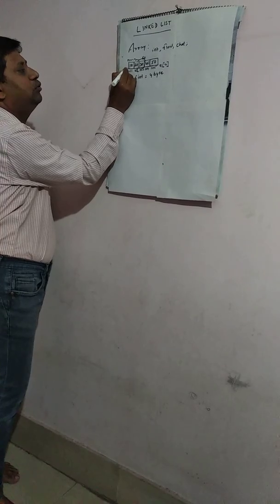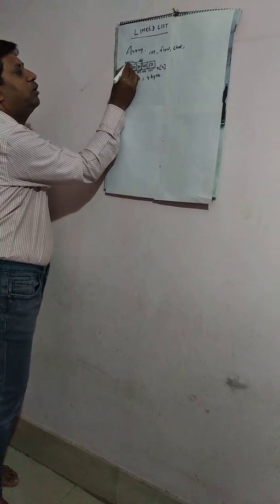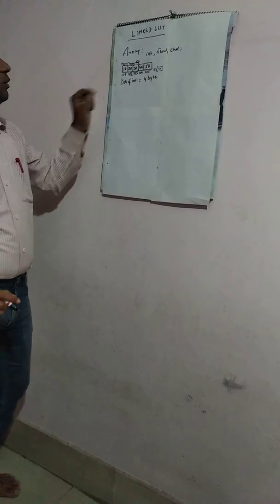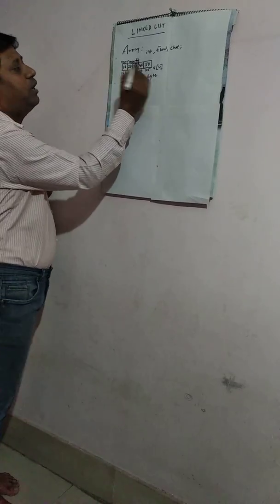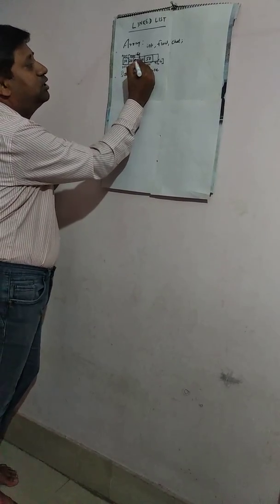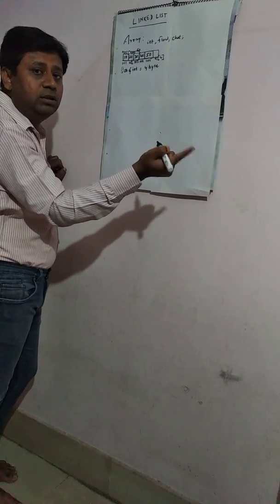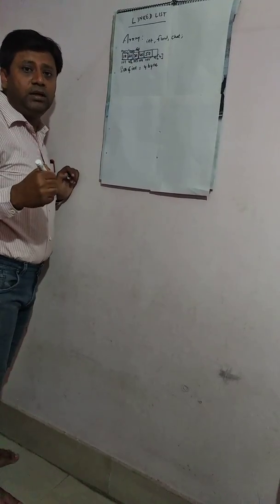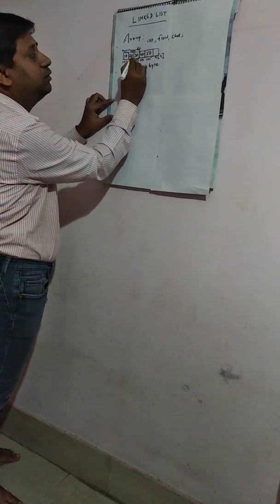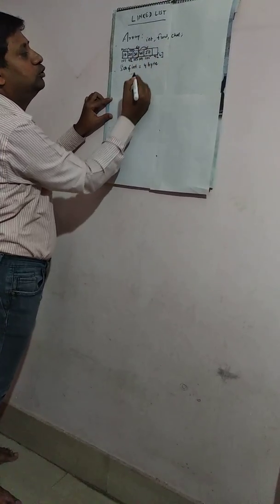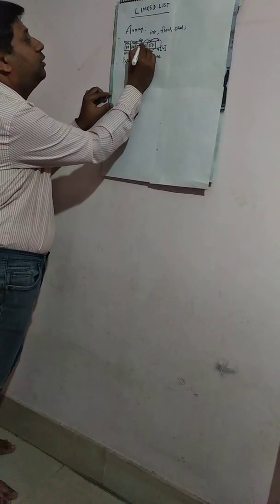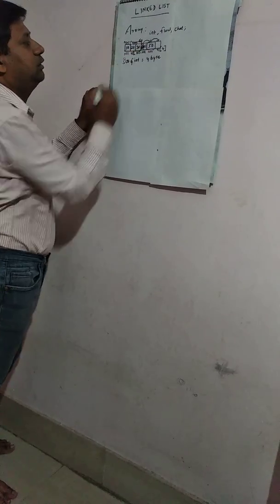So what we do? We have to make another space and shift one position forward so that we can create space in between the existing array. After 30, that means we have to shift 40 to the position of 50, and 50 to the position of the blank space. Then we get space here, and then we insert 60.